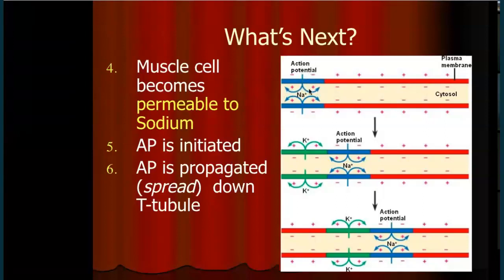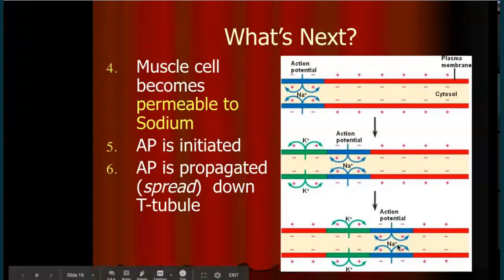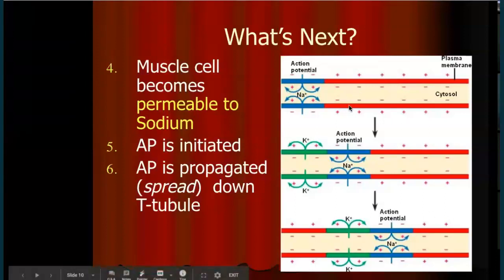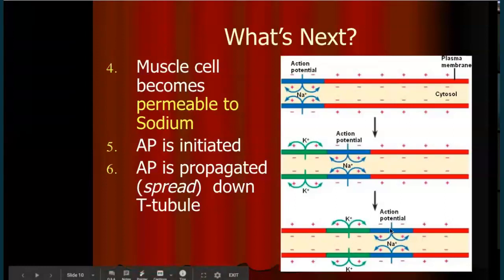Acetylcholine binding activates the sarcolemma, causing it to become permeable to sodium. Sodium comes in; the inside is now positive. Voltage-gated channels open due to the change in polarity — sodium comes in, the inside becomes positive, the next channel opens, sodium comes in again — a domino effect spreading all along the membrane. This is propagating, meaning spreading down the membrane and down a T-tubule, creating the action potential as the inside has become positive.